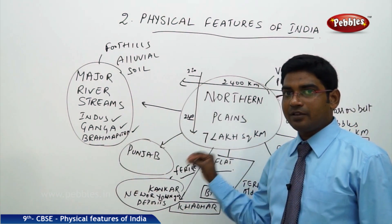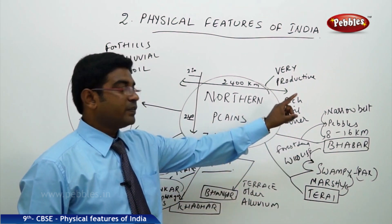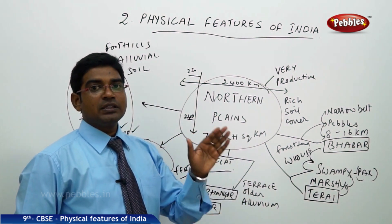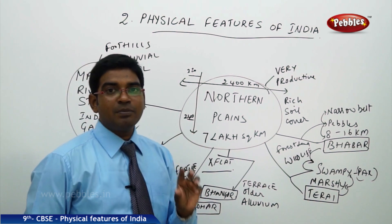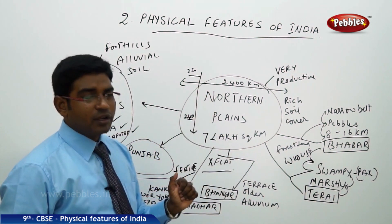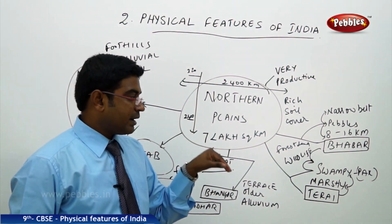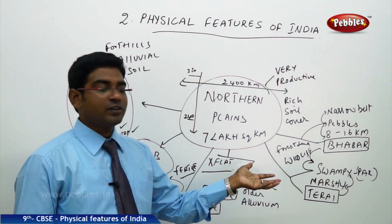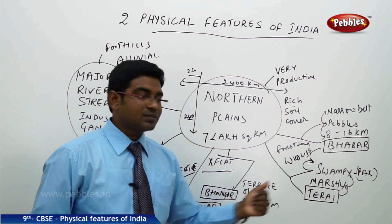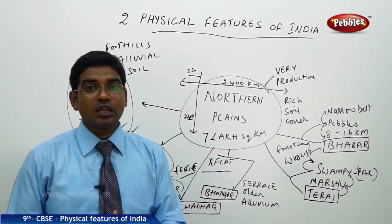The entire landmass in the Northern Plains has been divided into four major parts based on their texture and nature of the land. The narrow belt just below the Shivalik ranges, having pebble stones deposited there — 8 to 16 kilometers of width — that is Bhabar. Moving downward, the rivers re-originate here under the Bhabar land and re-emerge, creating swampy wetlands and a marshy track. That is known as Terai, where forest and wildlife was rich before India and Pakistan got partitioned.